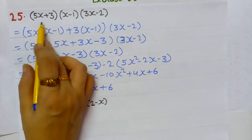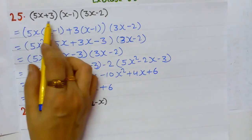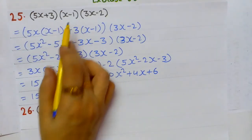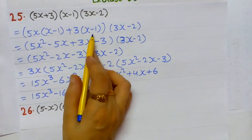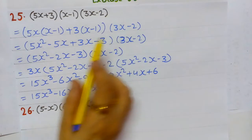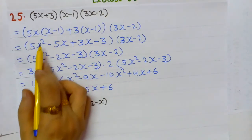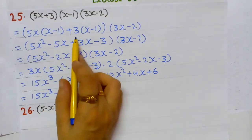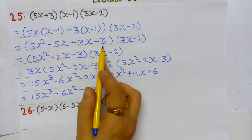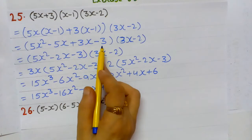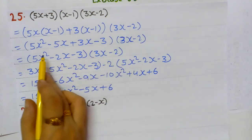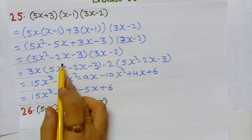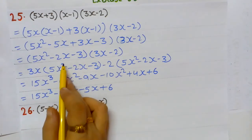The distributive property was applied by breaking the first bracket: 5x multiplied by the 2nd bracket, plus 3 multiplied by the 2nd bracket. So 5x × x = 5x², 5x × (-1) = -5x, 3 × x = 3x, 3 × (-1) = -3.